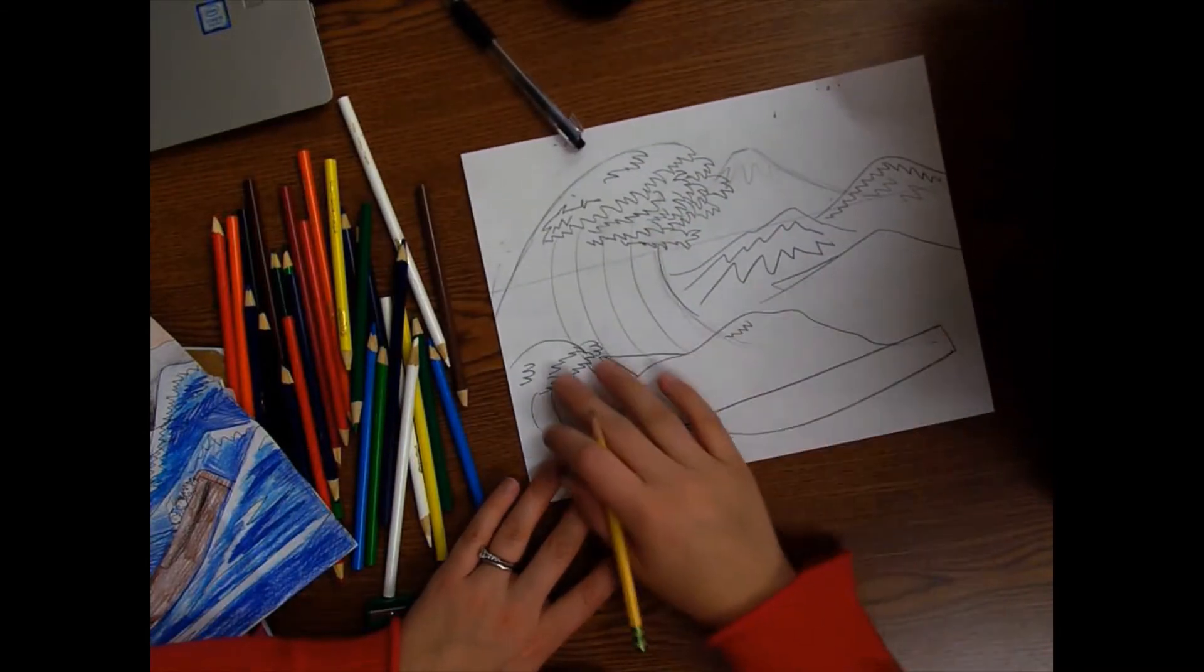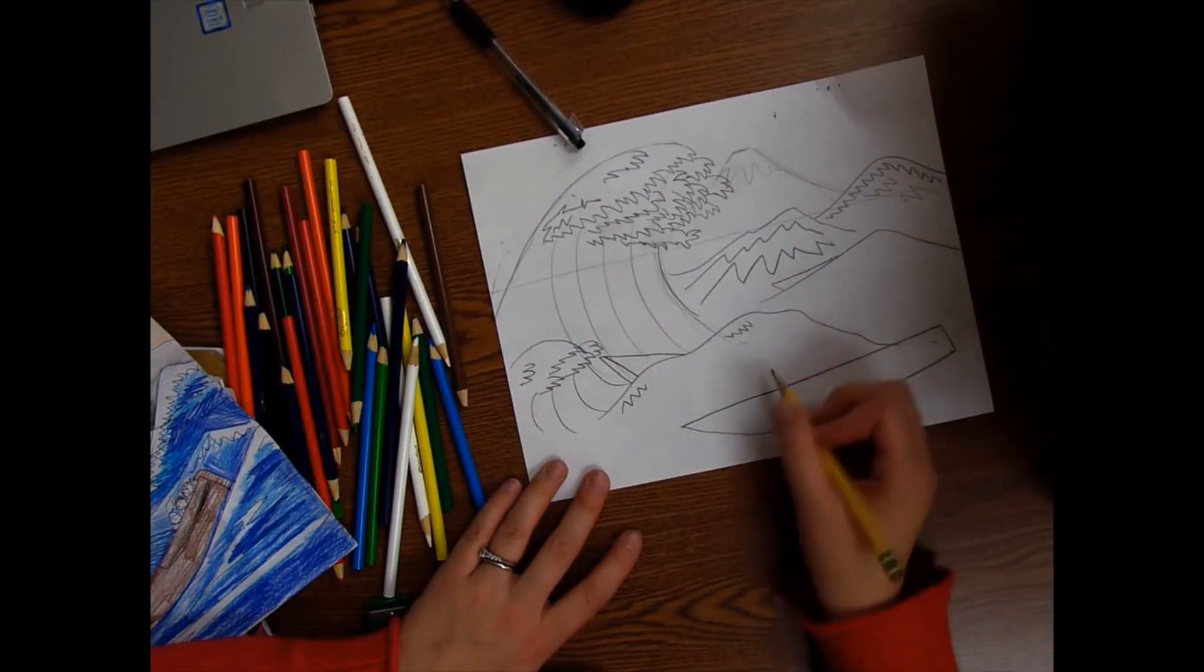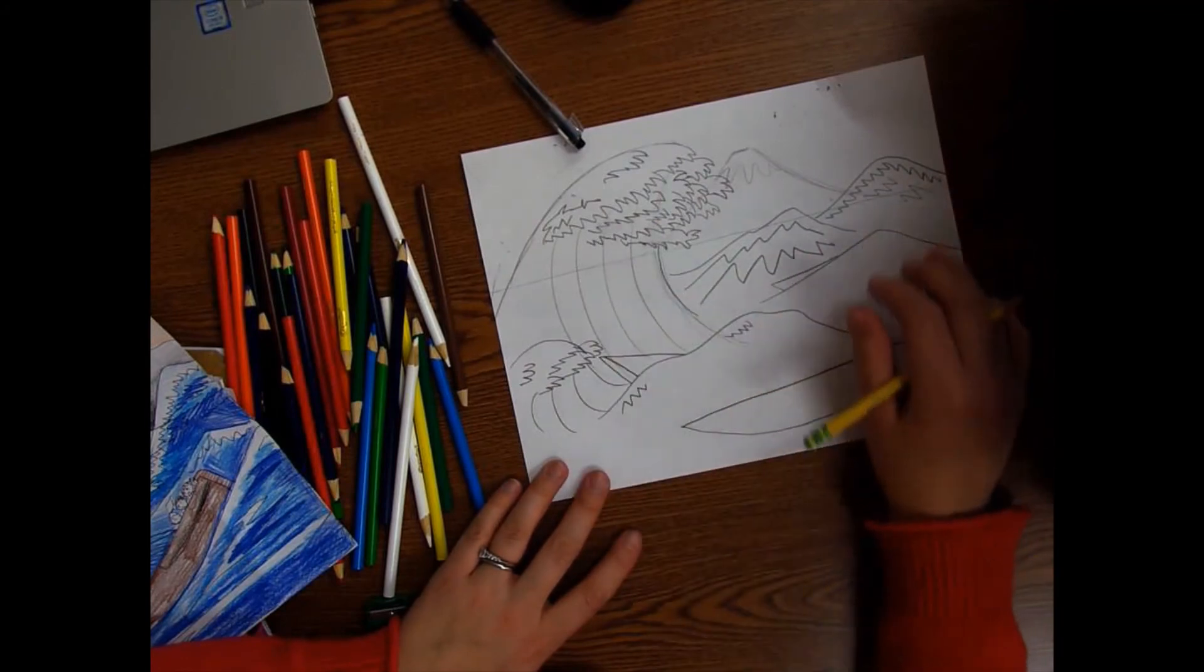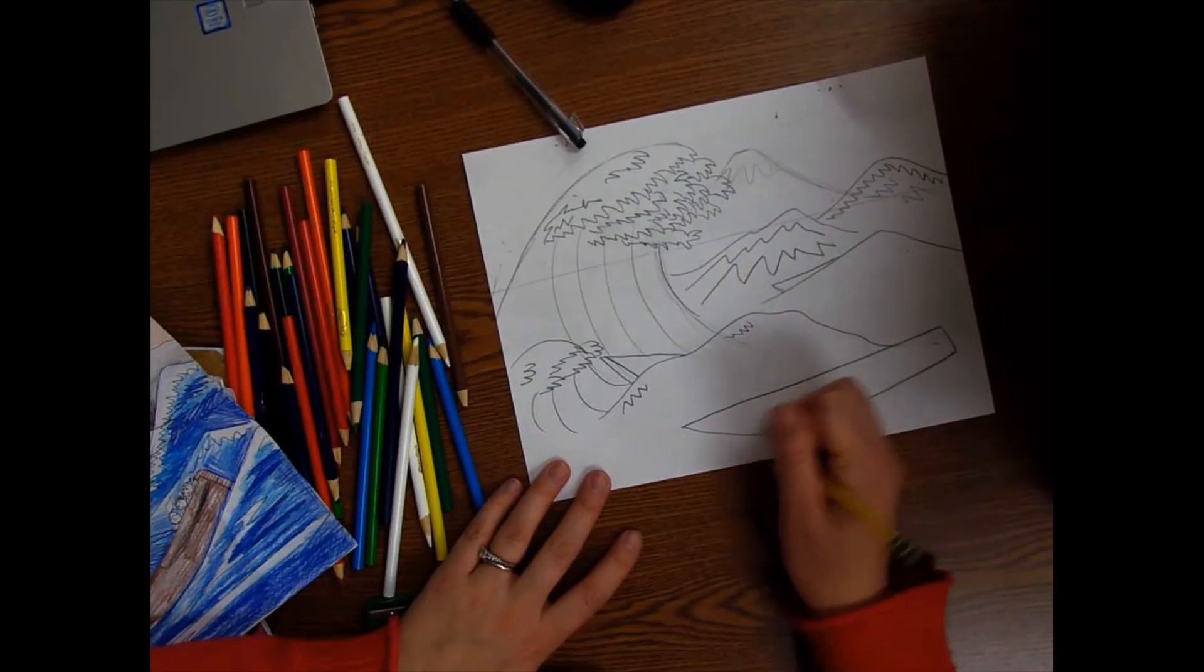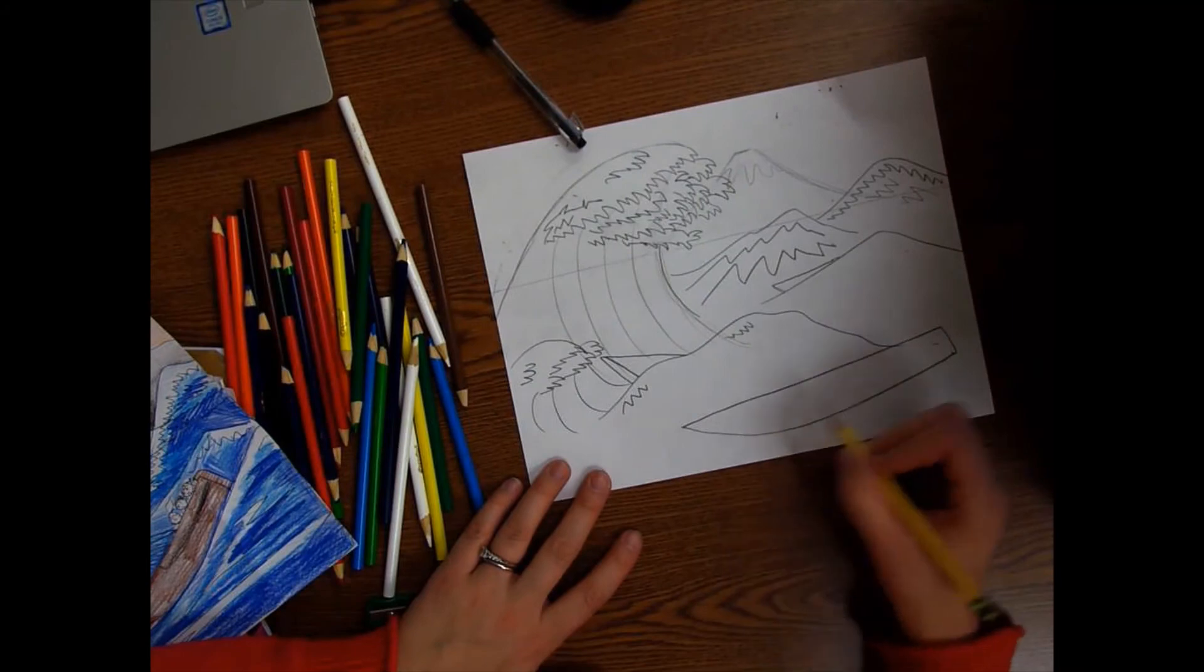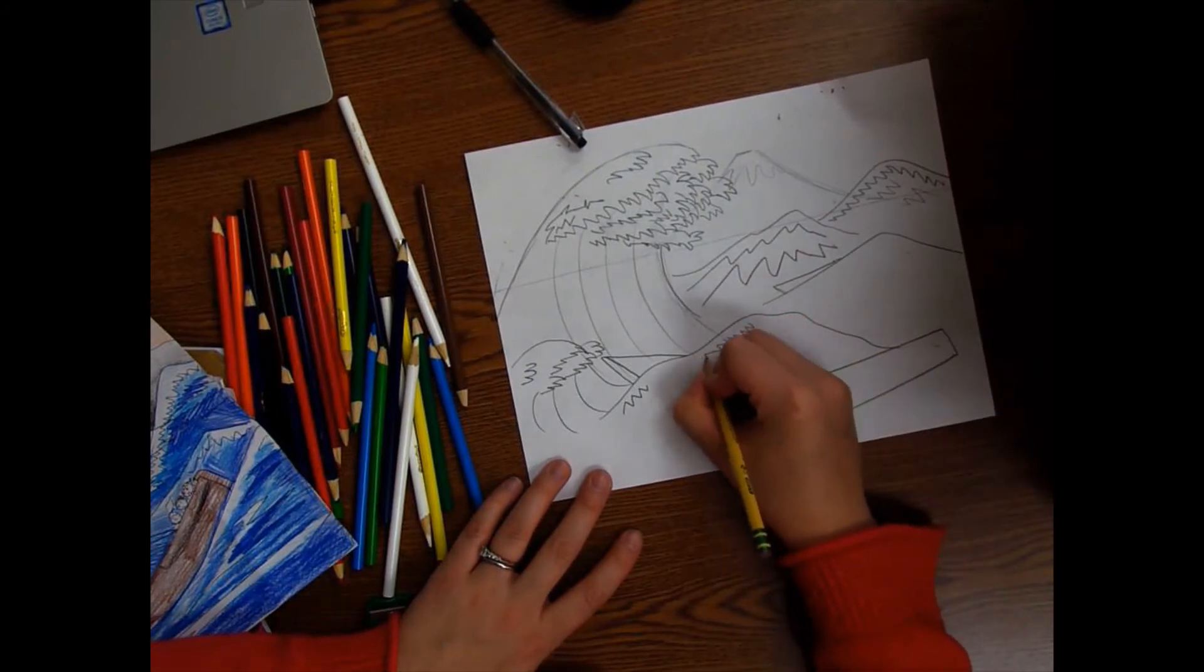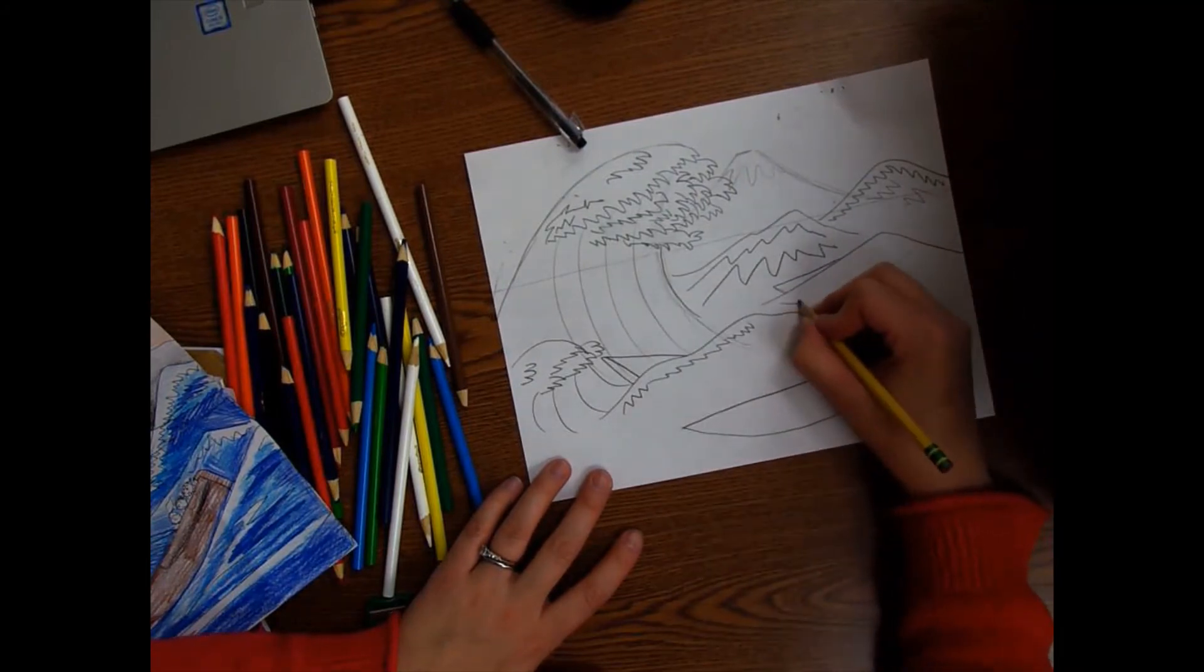So now I have drawn in my waves and some more details. I've added the boats in by drawing kind of triangle shapes with a rectangle on the end, and then I can just go in and finish up my zigzags.